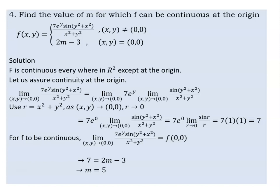So the function is continuous. For continuity, we need 2M minus 3 to equal 7. Checking the continuity condition at the origin, the function is continuous everywhere — specifically at the origin — when M equals 5.